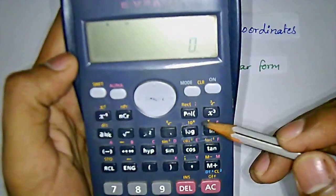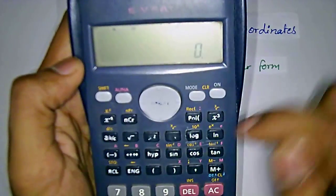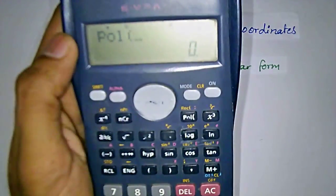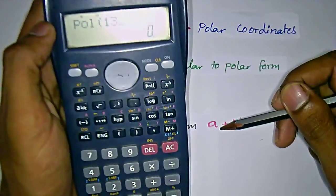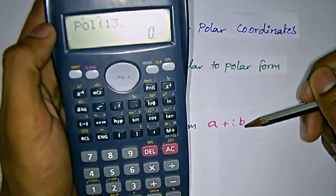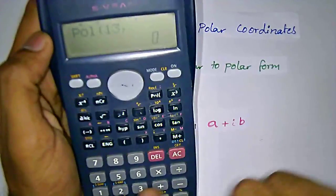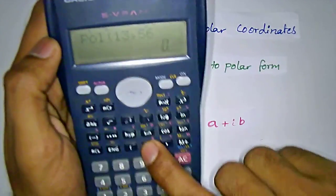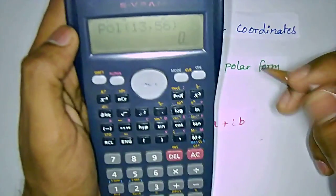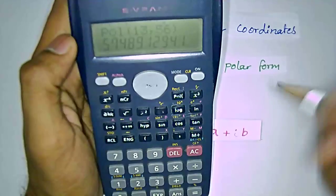When you are going to change rectangular coordinate to polar, you just press the POL button and type whatever the real part of the rectangular coordinate is. Put the comma to separate the imaginary part value, type the B value and close the bracket.